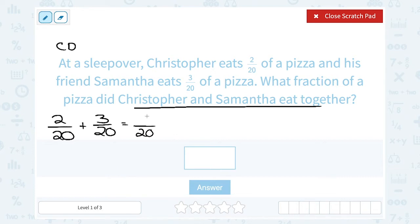So now that we have that down and our denominators are common or the same, we can just add straight across the numerator, meaning the top of our fraction. So on the top, two plus three gives us five. So all together, they ate 5/20 of a pizza.